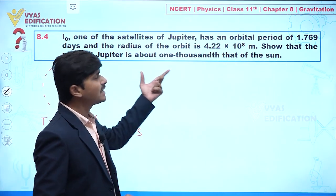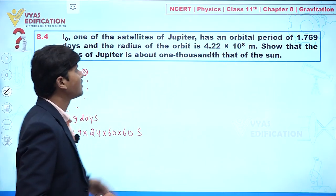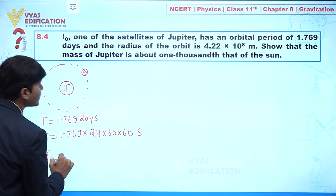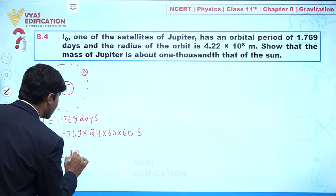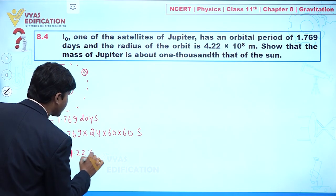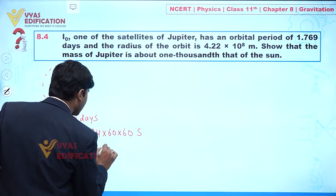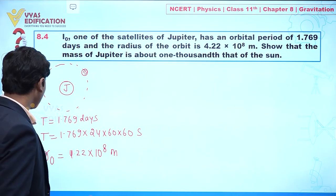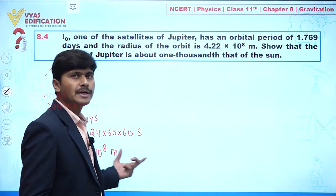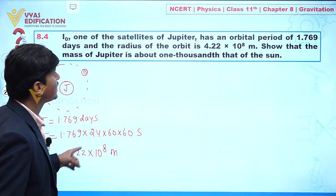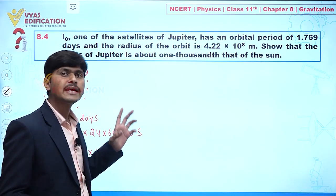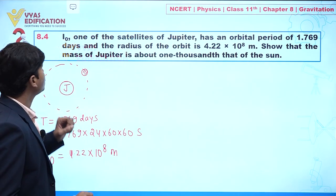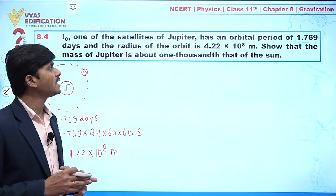The radius of orbit is also given as 4.22 × 10⁸ meters. Now we have to show that the mass of Jupiter is about 1/1000 of that of the Sun.